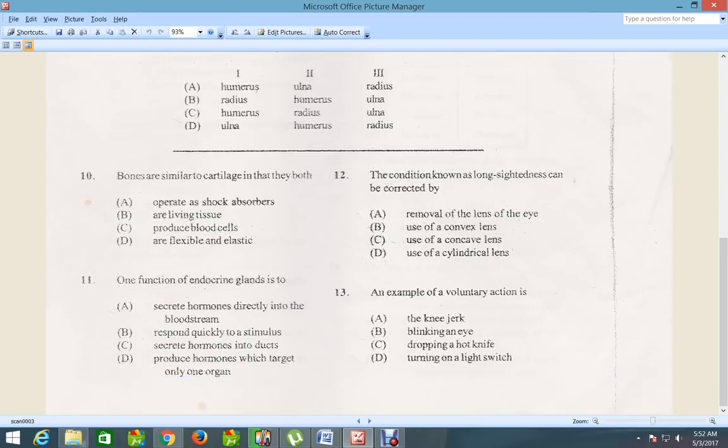Move down to question number 13. An example of a voluntary action is: knee jerk, blinking an eye, dropping a knife, turning on a light switch. And the correct answer for that is turning on a light switch.